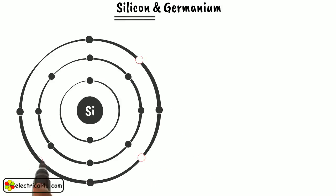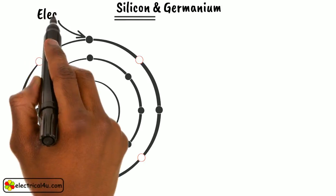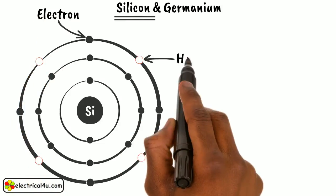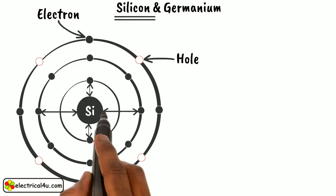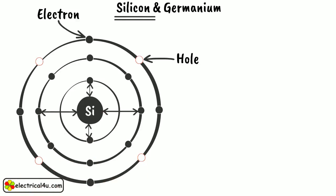Silicon atoms have 4 valence electrons and 4 holes in their outermost orbits. The closer an electron is to the nucleus, the stronger is the binding force between the electrons and the protons in the nucleus.